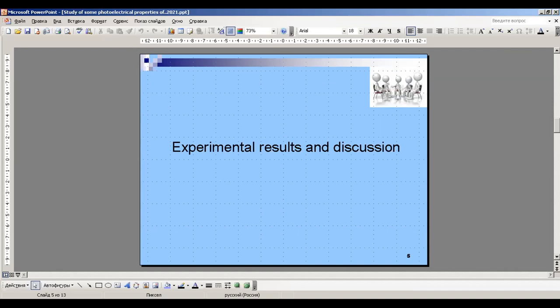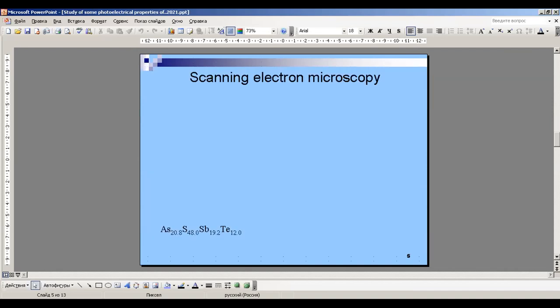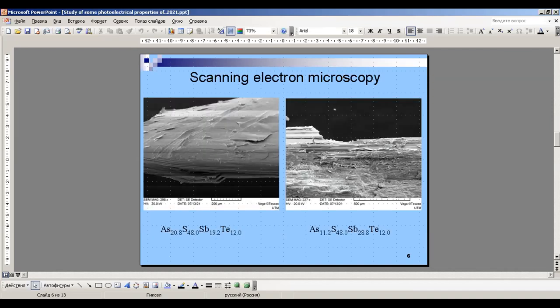We move towards results and discussion. You can see here two images of the scanning electron microscopy. From this investigation, we can see good layers of nanocrystals and nanometer-scale materials.